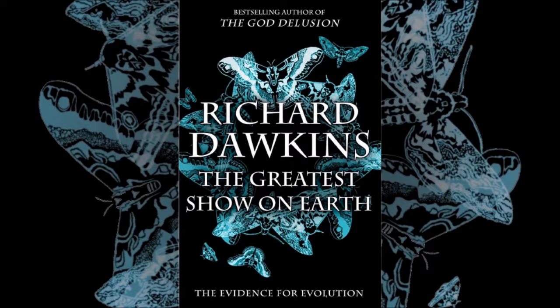Were it not for natural selection, such independent parallelism in 59 genes independently would completely beggar belief. The odds against its happening by chance are stupefyingly large. This is exactly the kind of thing creationists say cannot happen, because they think it is too improbable to have happened by chance.